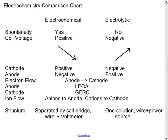Electron flow is anode to cathode in all cells — it doesn't matter if you're electrochemical or electrolytic. In an electrolytic cell we pump the electrons into the anode; in an electrochemical cell the electrons are being sucked out of it. Electron flow always goes from anode to cathode.